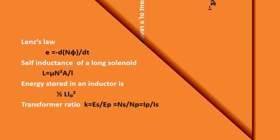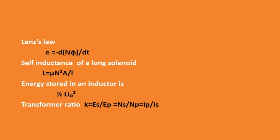Next is Lenz's law. The induced EMF E equal to minus N·d·phi by dT. The negative sign represents that the induced EMF opposes the change in flux. Next is self inductance of a long solenoid, represented by L: L equal to mu·N²·A by l, where N is the number of turns and A is the cross-sectional area.